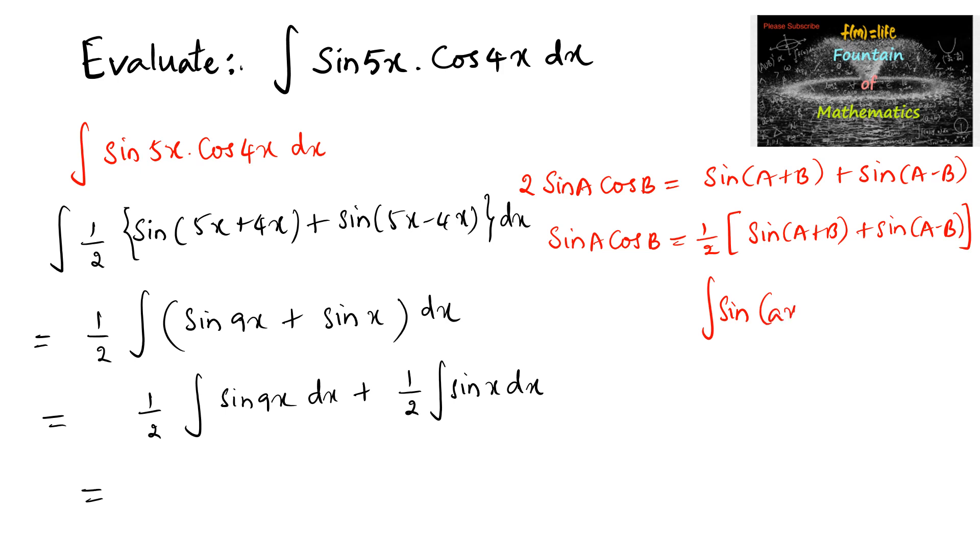sin(ax+b) dx is equal to negative cos(ax+b) upon a plus integral constant c. So, here we can write 1 by 2 times of negative cos 9x upon 9 and here 1 by 2 times of negative cos x plus integral constant c.